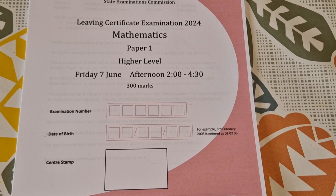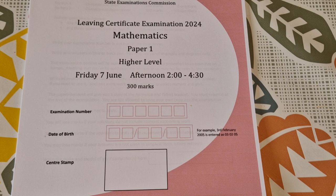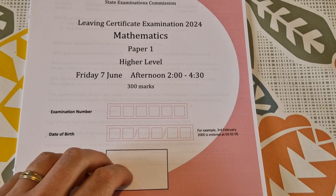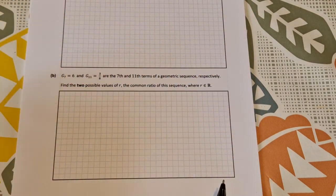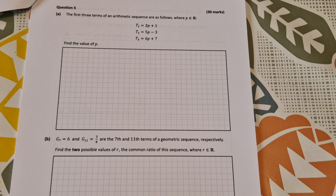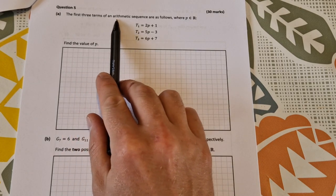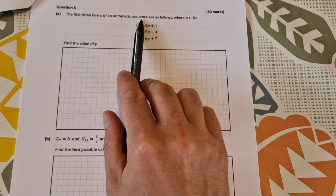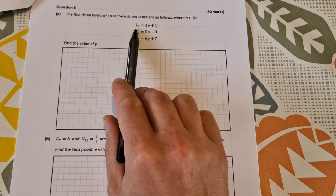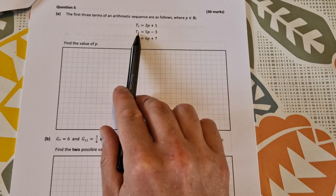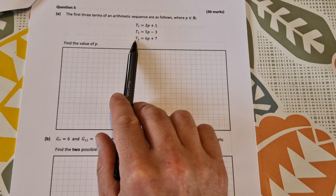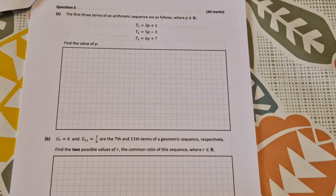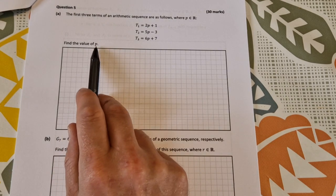Liam insert maths higher level maths 2024. This is the solution video to paper 1 question 5, a sequences and series question. The first three terms of an arithmetic sequence are as follows: t1 is 2p plus 1, t2 is 5p minus 3, and t3 is 6p plus 7. Find the value of p.